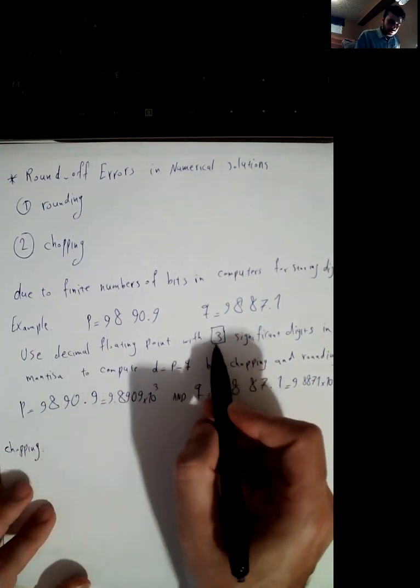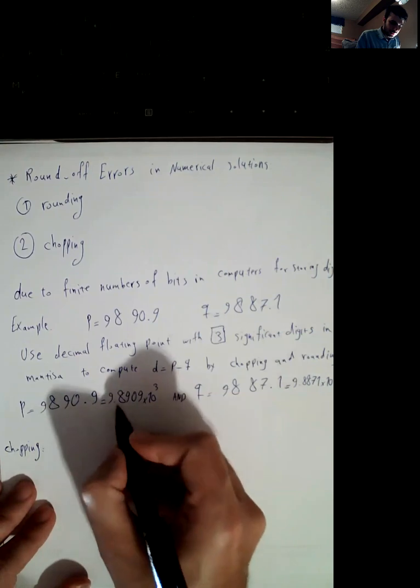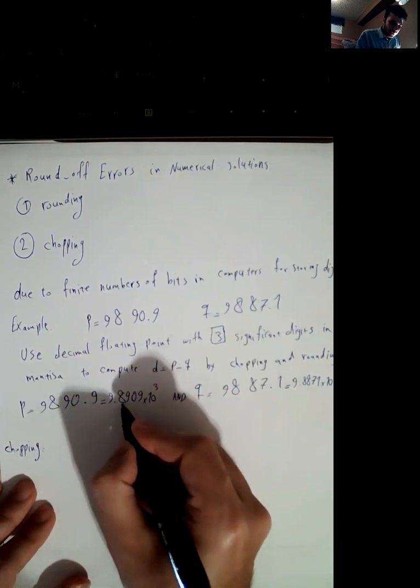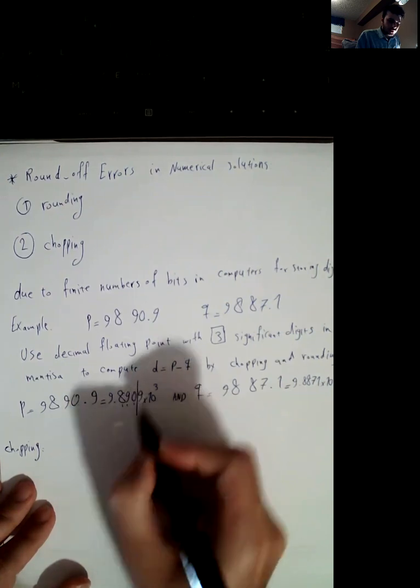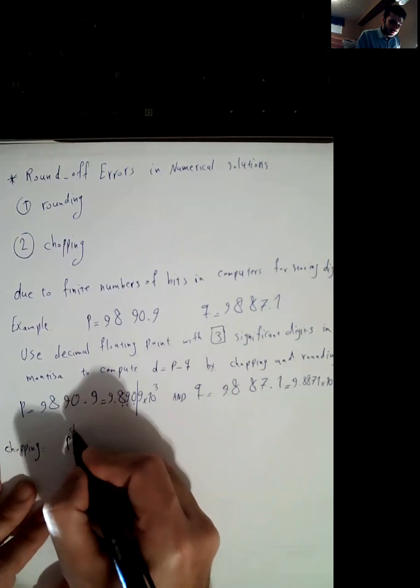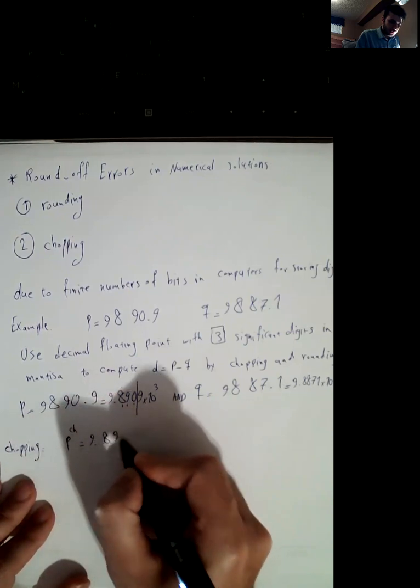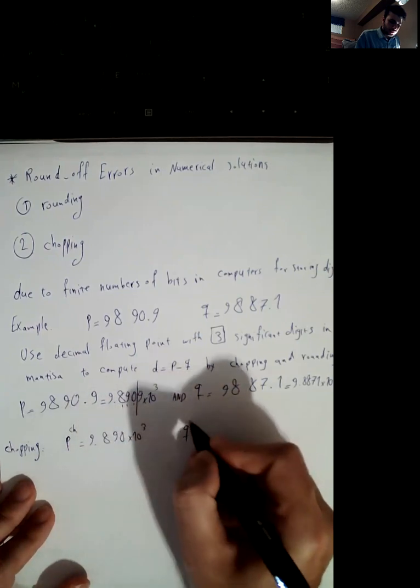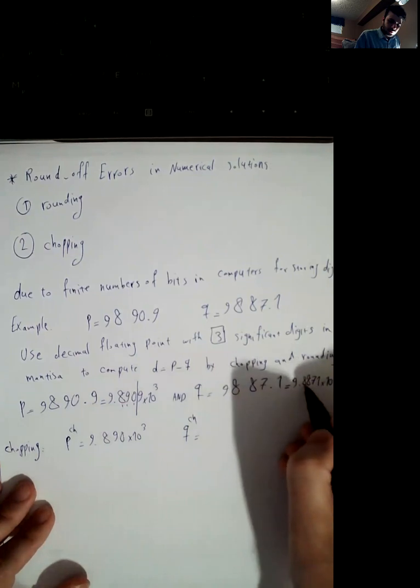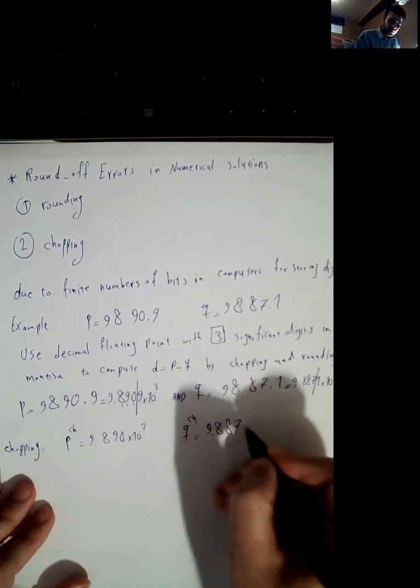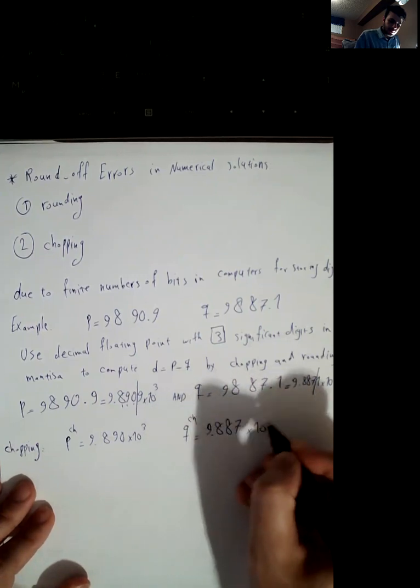For chopping, we should keep only three significant digits in mantissa, so one, two, three. We should just discard nine. Then p chopping is 9.890 times 10 to the 3 and q chopping is 9.887 times 10 to the 3.